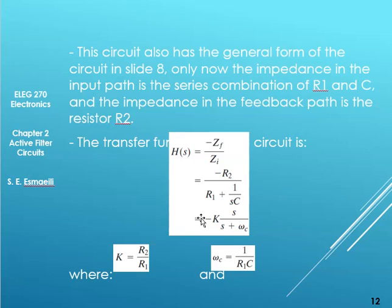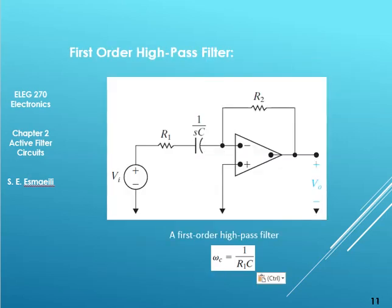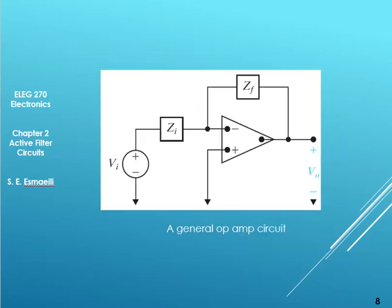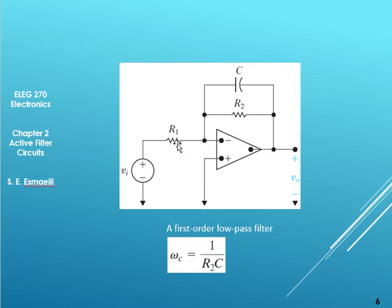As I said, the subject of active filters is super easy. You only need to remember this: the first order high pass filter looks like this, the capacitor and resistor in the input in series and only a resistor in the feedback. A low pass filter looks like this: resistor in the input and a parallel capacitor and resistor in the feedback.